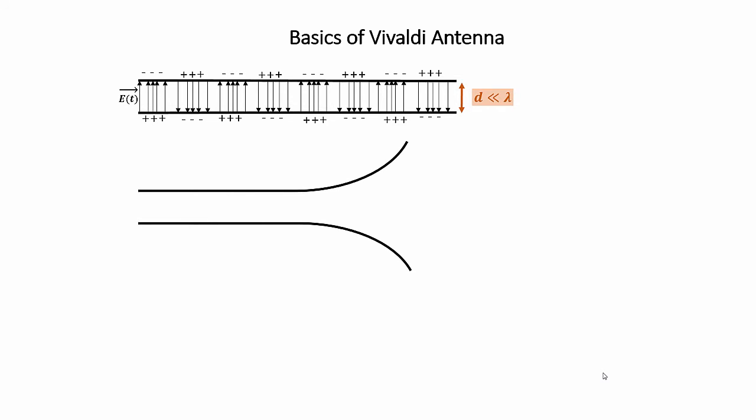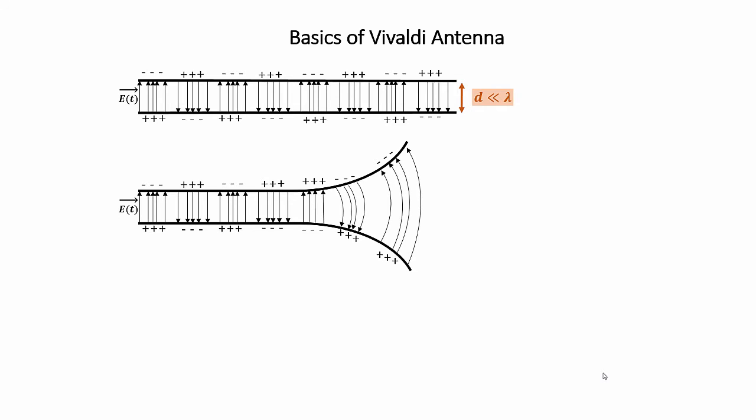Now imagine we bend the conductors at one end. Now what happens is that the electric field lines start to bend as it encounters this widening path. The field lines are no longer tightly bound and start to loosen up more and more. So that's interesting.